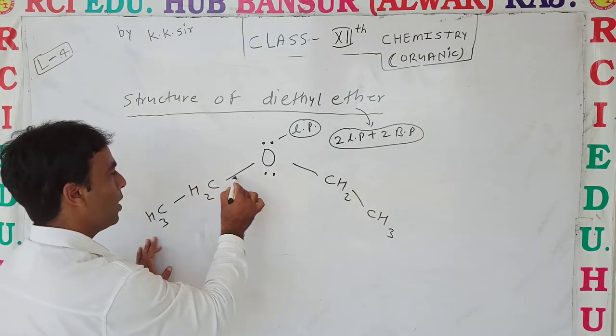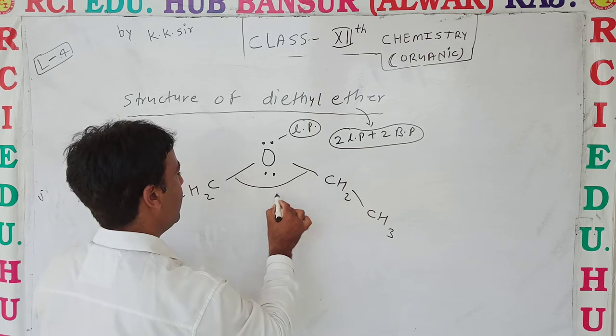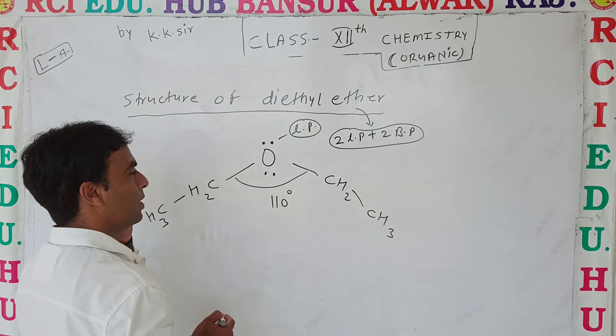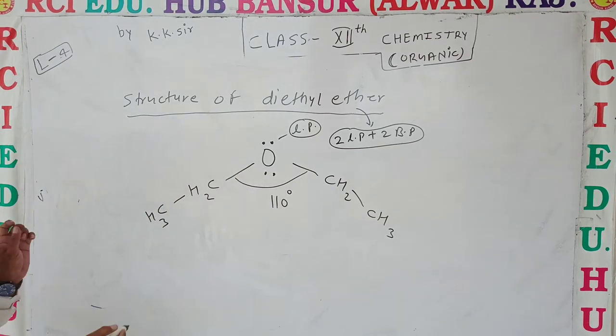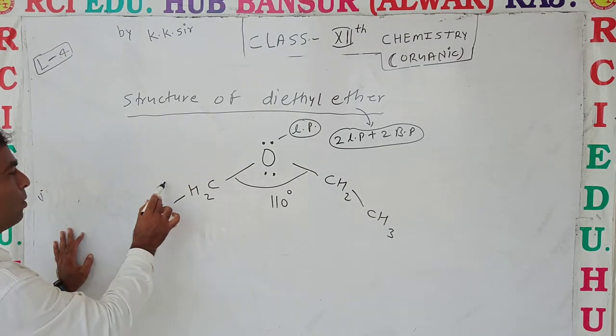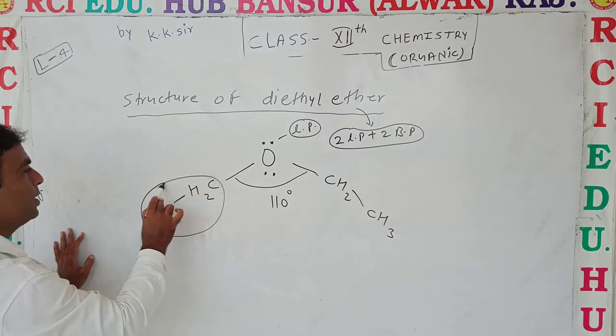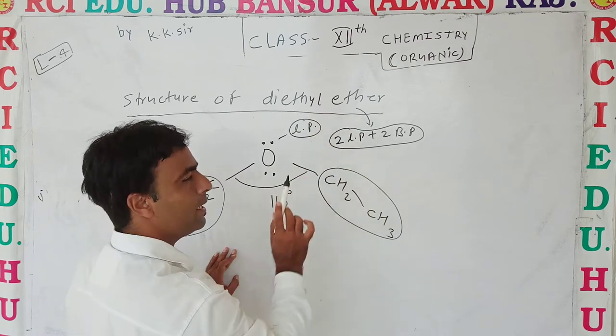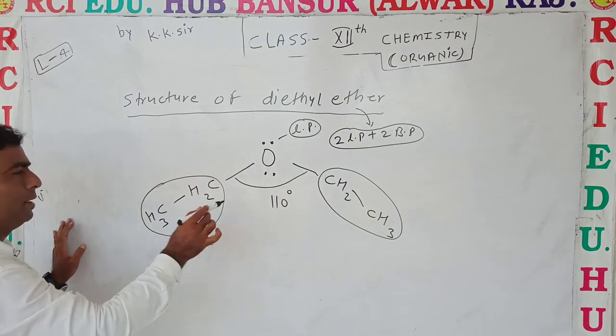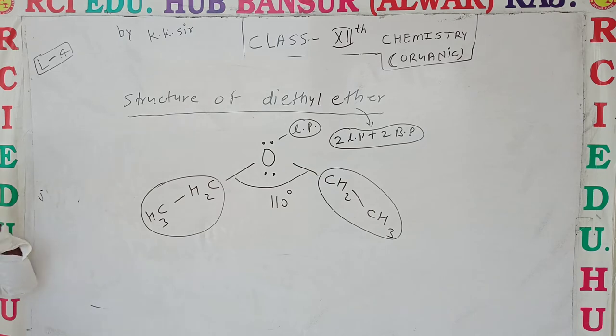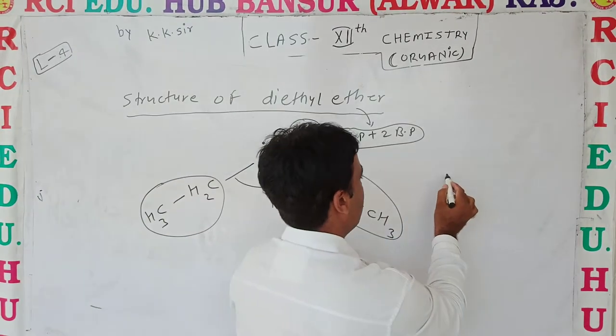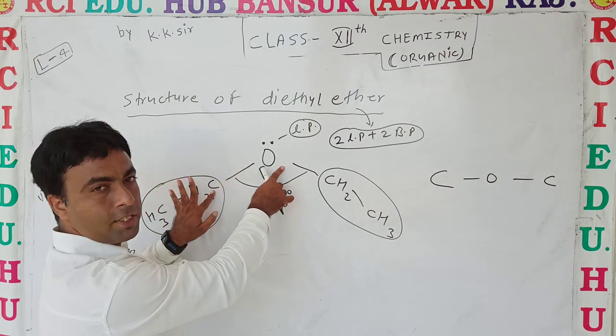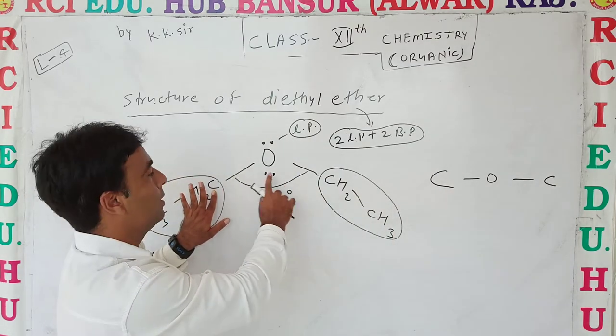The bond angle between these groups is 110 degrees. This bond angle comes due to the presence of the ethyl groups - that is diethyl ether. In this structure you can see the bond between carbon-oxygen-carbon, and this carbon-oxygen-carbon bond is 110 degrees.